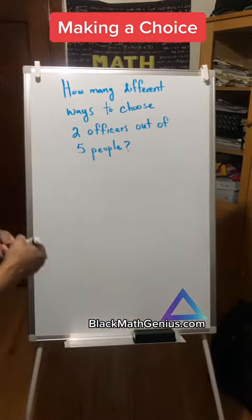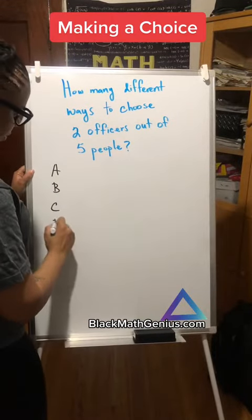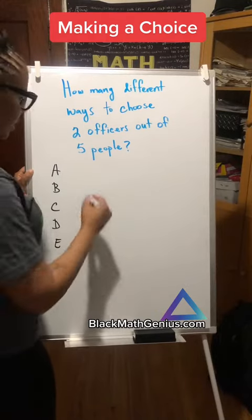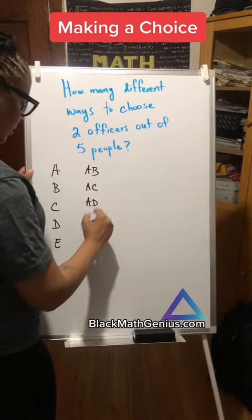So let's say that the five people are A, B, C, D, and E. And so the combinations, let's just write it out this time. We have AB, AC, AD, and AE.